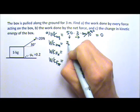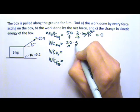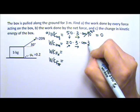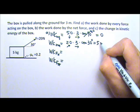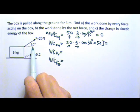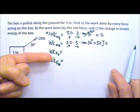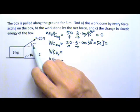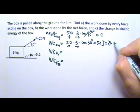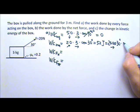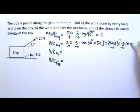Now for the 20 N force: it acts at 30 degrees above horizontal and the displacement is 3 meters to the right. The angle between the force and displacement is 30 degrees, so the work is 20 times cos(30°) times 3, which gives 52 J. You can also find the component of force parallel to the displacement, which is 20 cos(30°), then multiply by 3 meters at 0 degrees. Either way you get exactly 52 J.